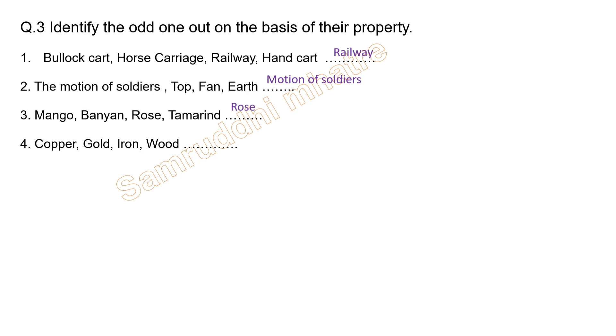Fourth group: copper, gold, iron, and wood. Copper, gold, and iron are metals, while wood is a non-metal. So the odd one out is wood.